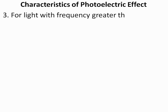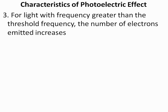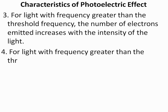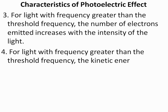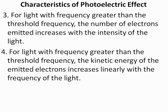For light with frequency greater than the threshold frequency, the number of electrons emitted increases with the intensity of the light, because more photons with sufficient frequency are available. Additionally, for light with frequency greater than the threshold frequency, the kinetic energy of the emitted electrons increases linearly with the frequency of the light.